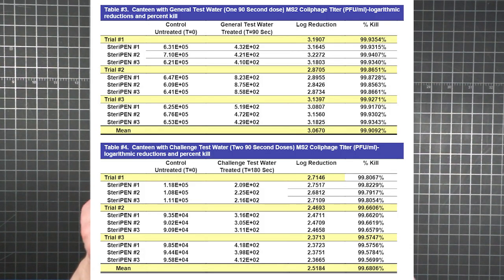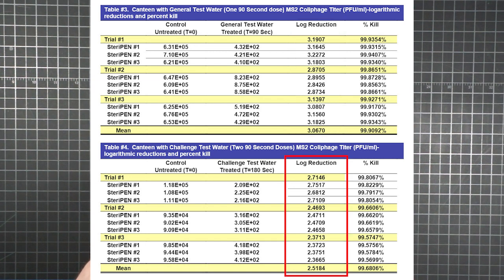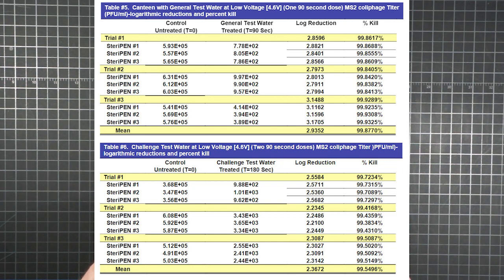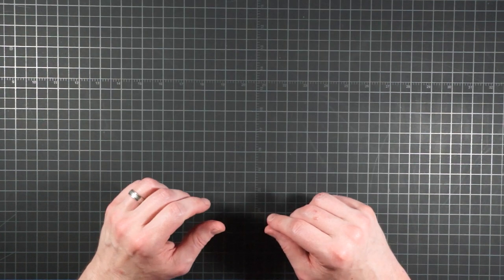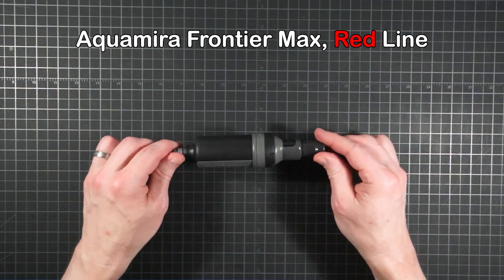So here are the results at normal voltage, still using MS2 as a proxy organism. One 90 second dose of UV for a liter of the general test water resulted in about three logs of inactivation. Interestingly, even after two doses, the challenge water only experienced a reduction of about two and a half logs. Then they ran the tests again at low voltage. The differences aren't huge, but they're measurable. And with the challenge water at low voltage, you're down to less than 2.4 logs, even after three minutes of irradiation. The virus results for this little filter right here are more than a thousand times better than that. No batteries required.